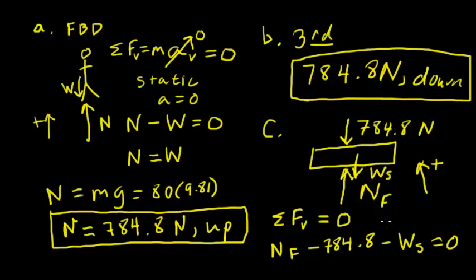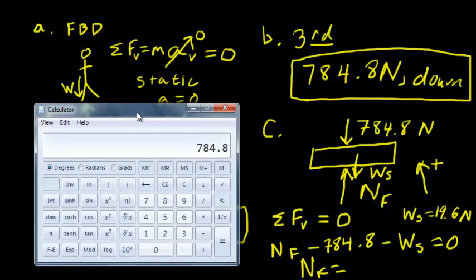And so then I can solve for the weight of the scale is going to be equal to 2 kilograms times 9.81, or 19.6 newtons. And so now when we solve for the normal force, we can write that normal force is going to equal 784.8 plus 19.6. So if I take this 784.8 and add to it 19.6, then I get 804.4.